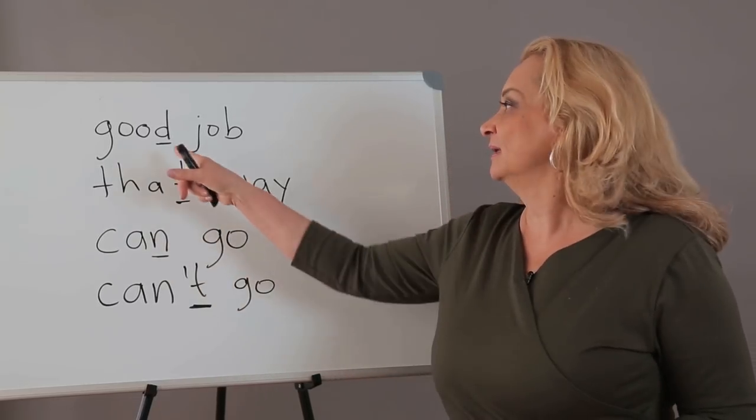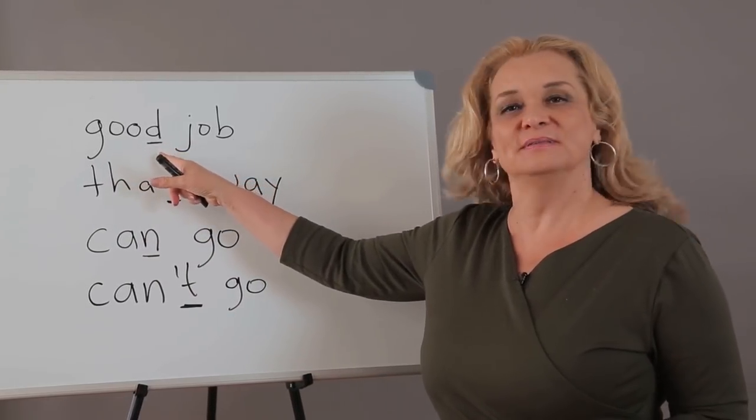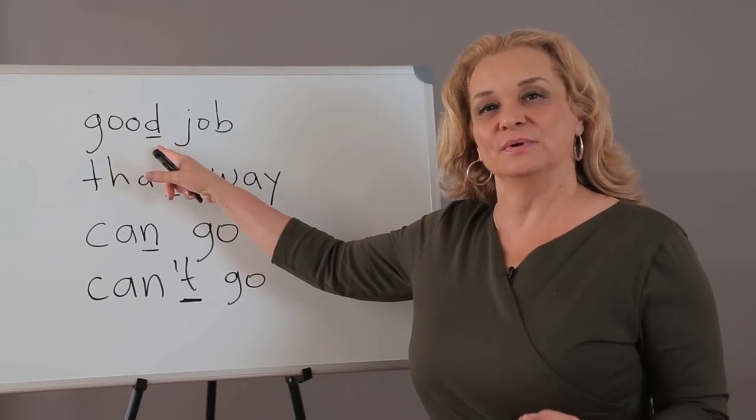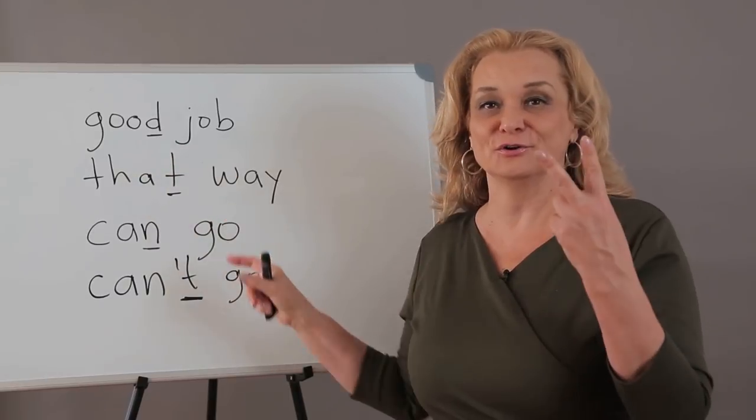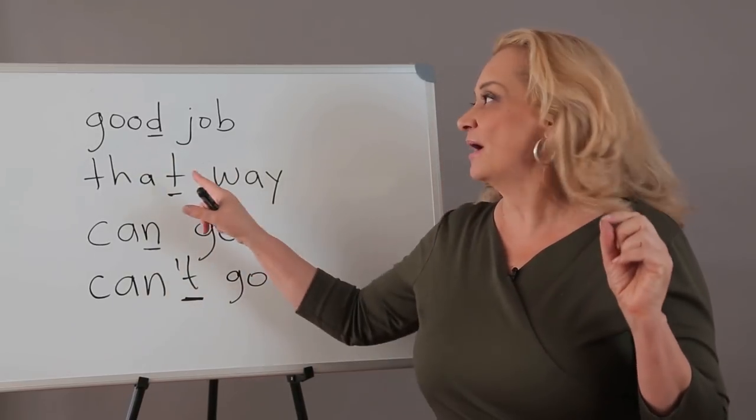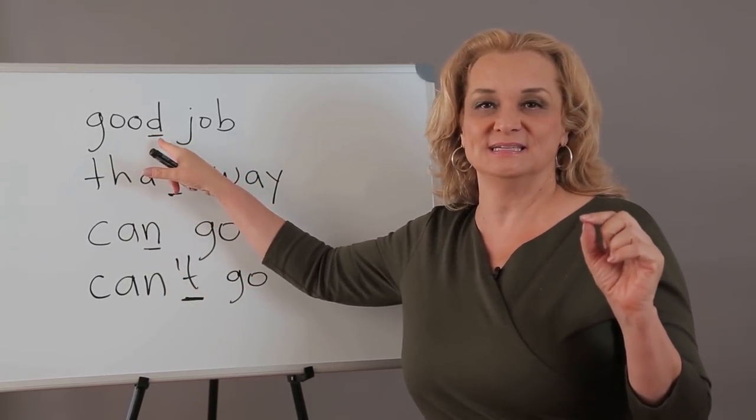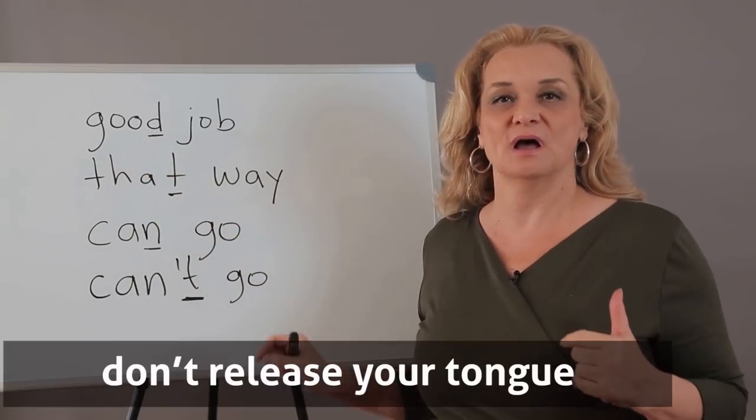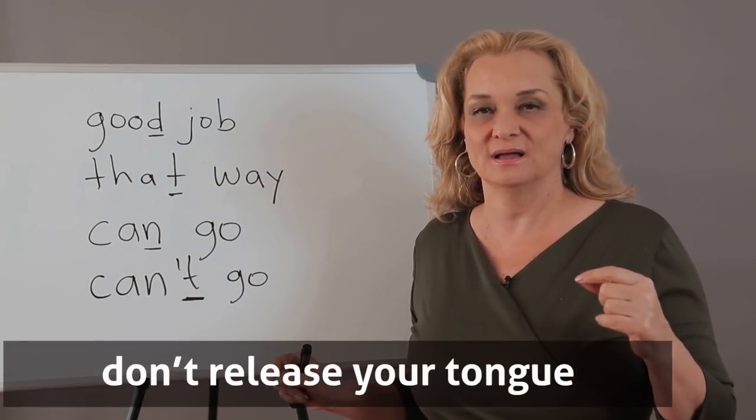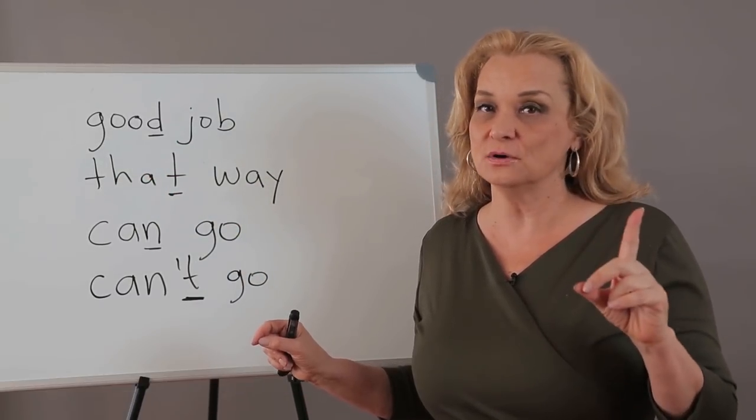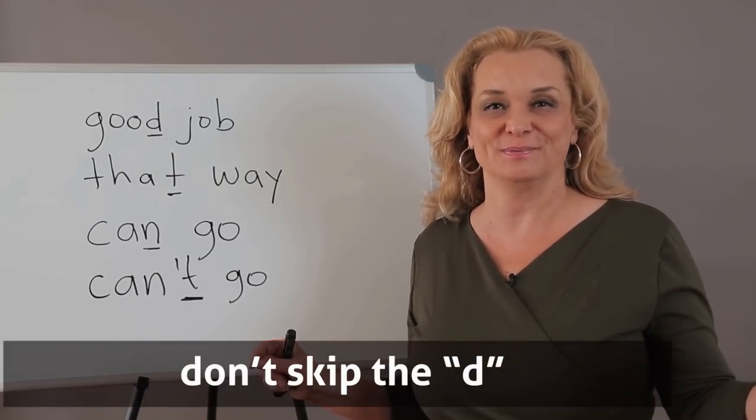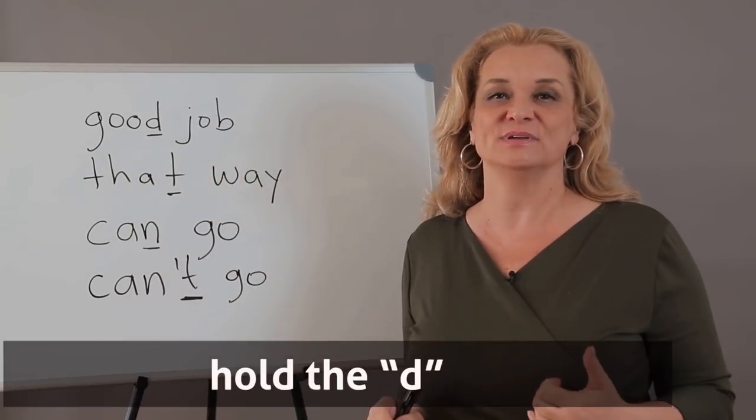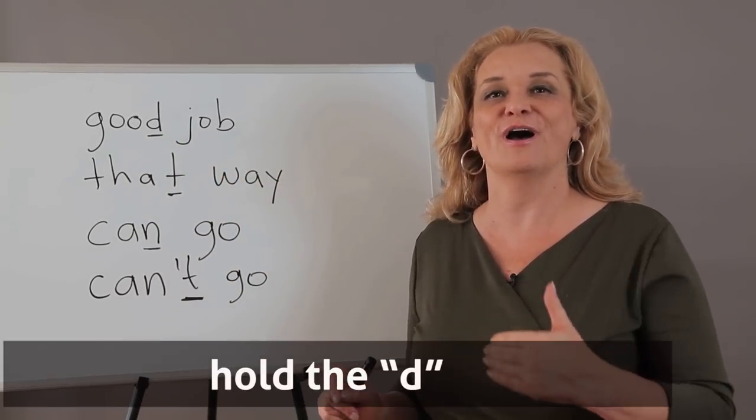Let me give you some examples. Let's look at these words. Look at this. Good job. The D is at the end of the word and then a J follows it in the next word. So there are two consonants together. You have to be careful what you do with this D. Don't release your tongue. Don't say good, good job. Also, don't skip the D completely. What we're doing is we're holding the D and we say good job, good job.